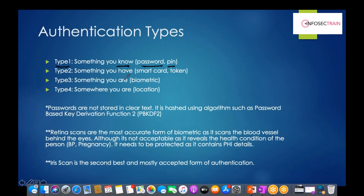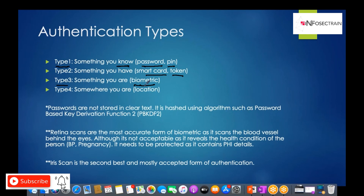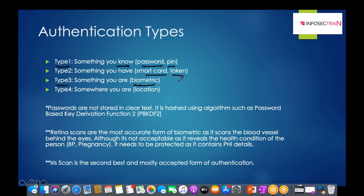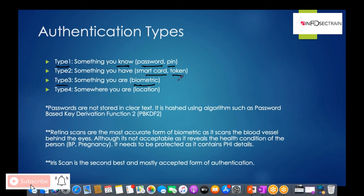Type 3 is something you are: a characteristic you possess, such as biometrics — fingerprint scan, facial recognition, voice recognition, or palm scan. For example, before taking the CISSP exam, the proctor will ask you to do a palm scan. Each time you leave your seat for a break and return, you must scan your palms again. This covers physical traits as an authentication type.